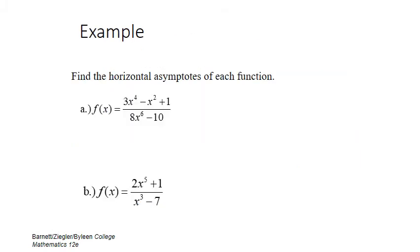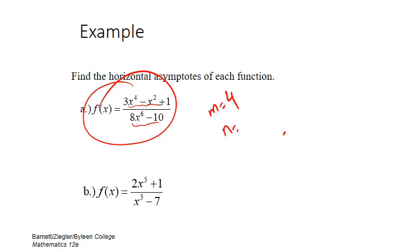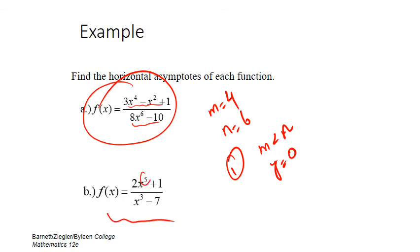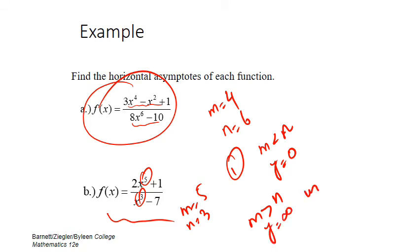Looking at another example: m equals 4 and n equals 6. Since m is less than n, this is Case 1, so the horizontal asymptote is y equals 0. In a third example, m equals 5 and n equals 3. Since m is greater than n, this is Case 3, so the horizontal asymptote is undefined.